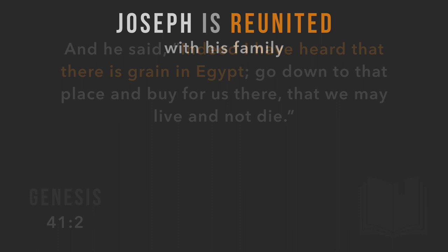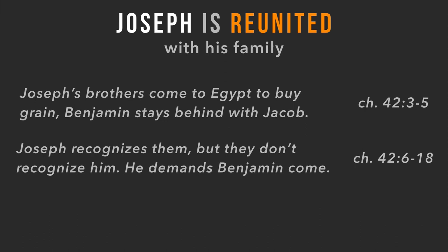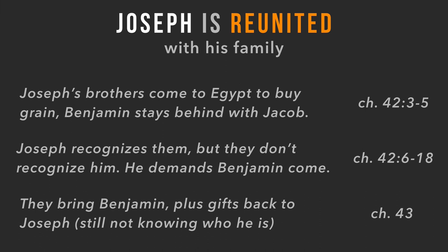This sets up an amazing reunion. Joseph's brothers come to Egypt to buy grain, but Benjamin stays back — Jacob says he can't lose Benjamin after already losing Joseph. Joseph is in charge of the whole operation and recognizes his brothers, but they don't recognize him. Wanting to see all his brothers, he demands Benjamin come without revealing his identity. He even throws his brothers in prison temporarily. Eventually they return with Benjamin and gifts in chapter 43.